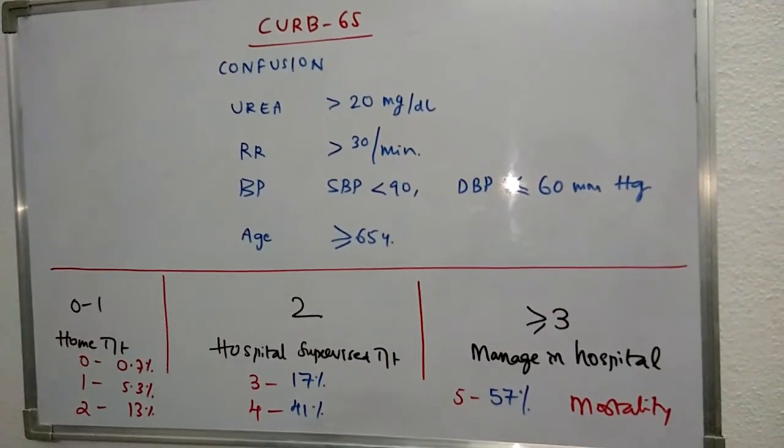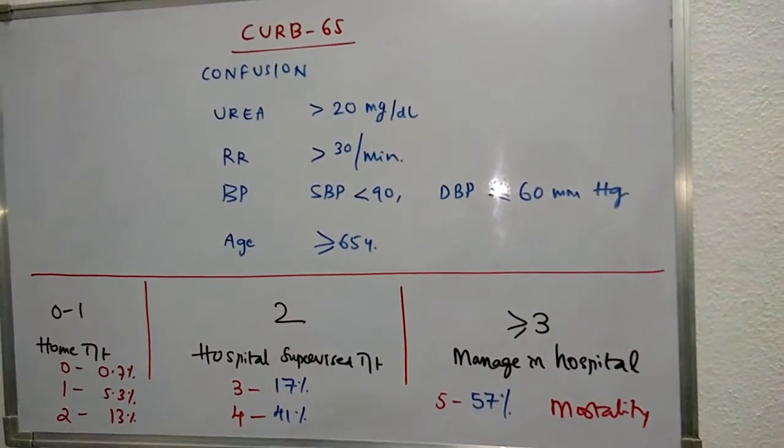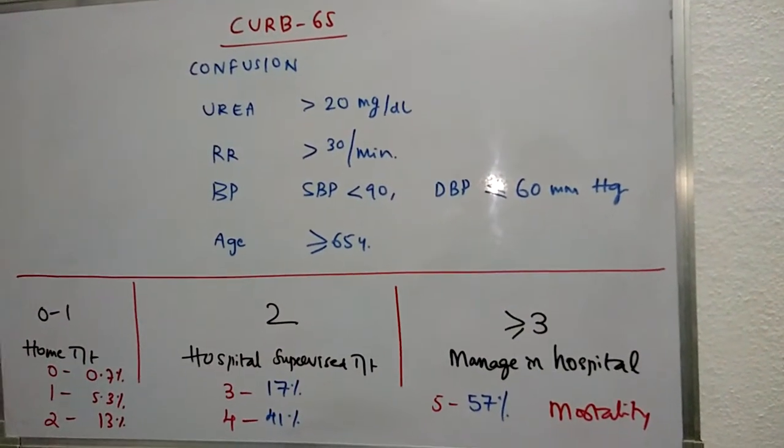If the score is 2, hospital-supervised treatment is advocated. If the score is 3 or more, the patient should be managed in a hospital, preferably in the ICU.